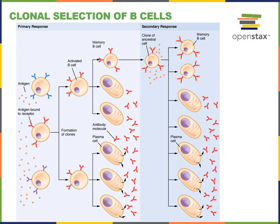During the primary response, both memory B cells and effector cells are produced. After the infection is cleared, most of the effector cells will die, but there will still be memory B cells circulating in the body and found in the secondary lymphoid organs. Those memory B cells can then become activated if we're exposed to the same pathogen again, leading to a much more rapid response to produce the effector cells and secrete antibodies to defend against that infection the second time we're exposed.